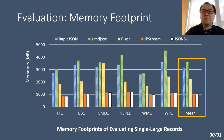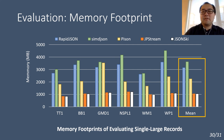In terms of memory consumption, we can see that JSON-Ski achieves the lowest among the evaluated methods, similar to JPStream thanks to their streaming design. While the other non-streaming methods take substantially more memory, due to the construction of either parsing trees or structural indices.